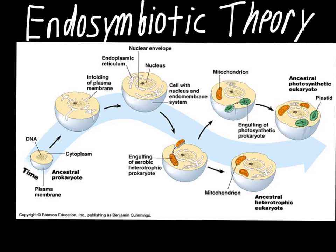The next thing has to do with how we got the mitochondria. This phrase looks complicated at first: engulfing of an aerobic heterotrophic prokaryote. We'll break this down into its basic parts. Aerobic means it requires oxygen — we know this about the mitochondria. Mitochondria requires two things: oxygen and sugar. So the aerobic part just talks about that requirement for oxygen.